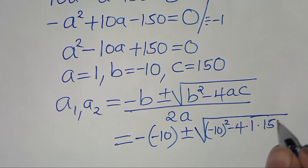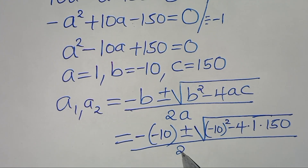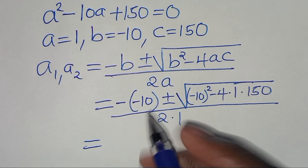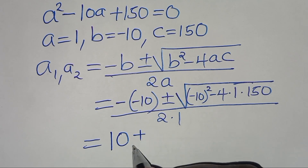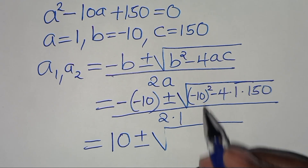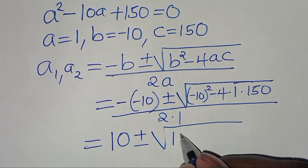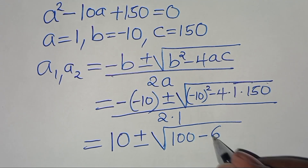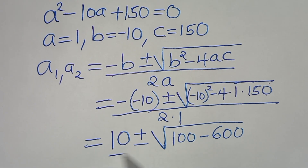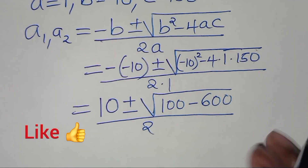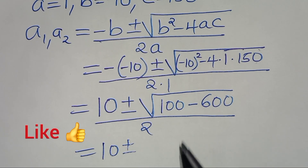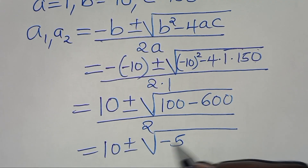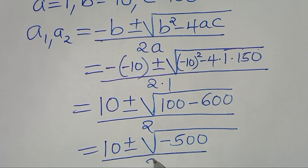Substituting in, we have minus times minus 10, which gives 10; then b squared is 100, subtract 4 times 1 times 150 which is 600, all divided by 2. So we have 10 plus or minus the square root of 100 minus 600, which is negative 500, all divided by 2.